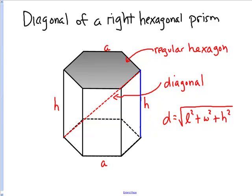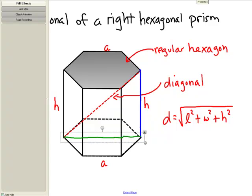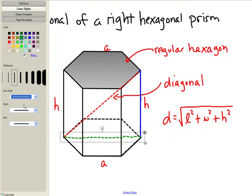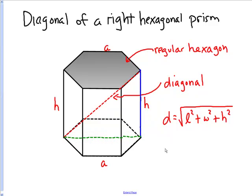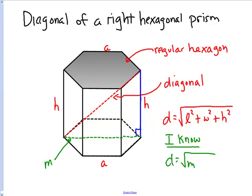Drawing from the end of the blue segment all the way across — keeping in mind that this line is on the inside of the prism, shown as a dashed line — creates a right triangle. Now I need to find the length of that bottom segment, which I'll call m. So d equals the square root of m squared plus h squared.